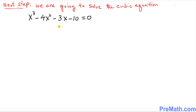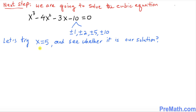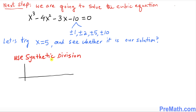In this step we are going to solve the cubic equation from the previous step. Our anticipated solutions are the divisors of 10: positive or negative 1, 2, 5, and 10. From experience, I strongly believe x equals 5 is one of the solutions. We are going to test x equals 5 using synthetic division.